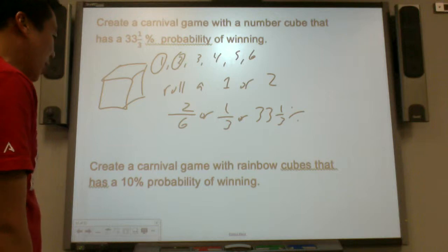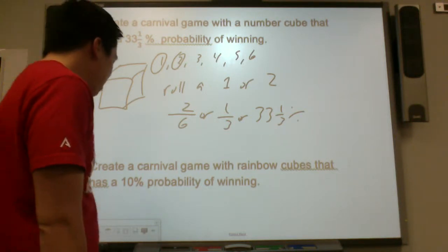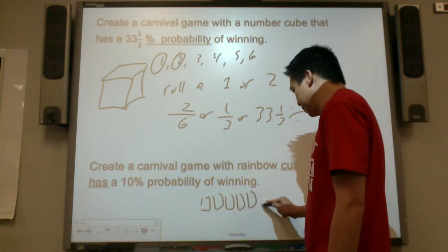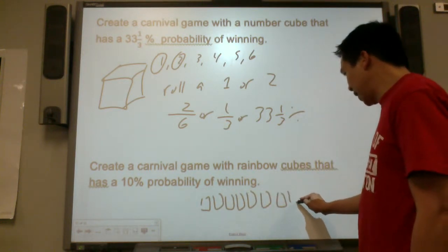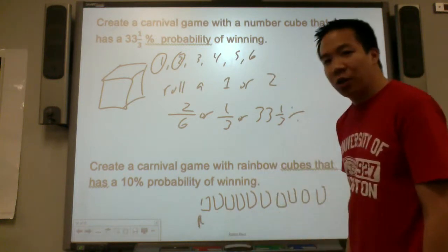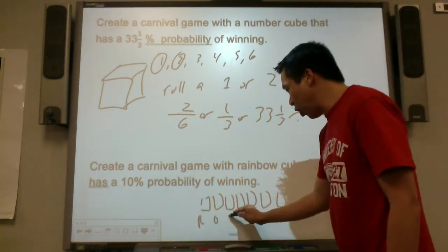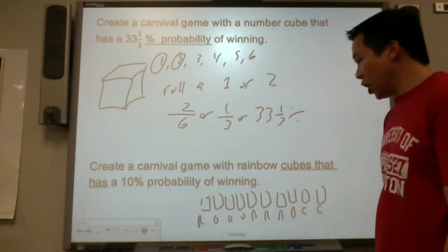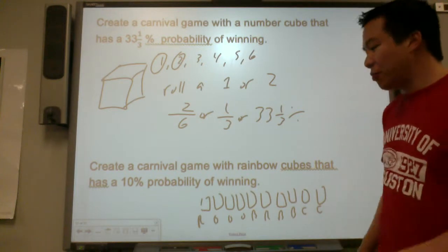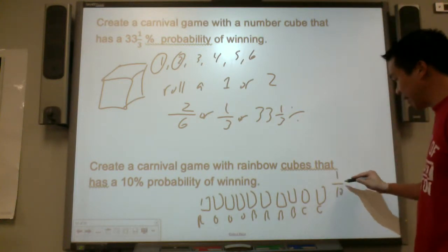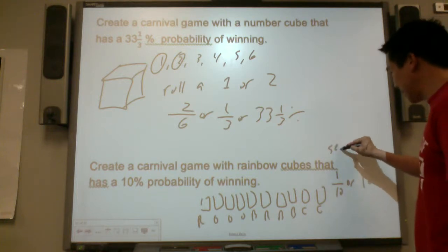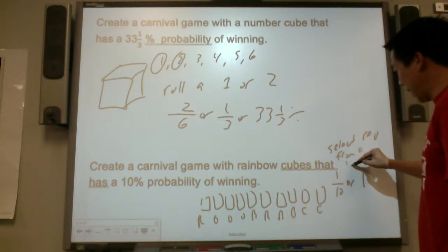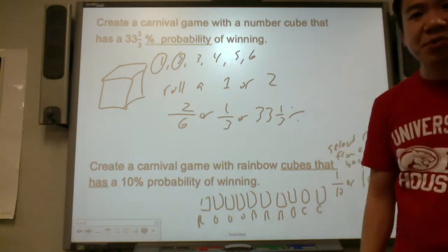Create a carnival game with rainbow cubes that have 10% probability of winning. So let's say if you have 10 rainbow cubes: seven, eight, nine, ten. You make the first rainbow cube red, the other ones will be all different types of colors. So if you select red from the bag, it's one out of 10 or 10%. Select red from a bag. That will be a 10% chance of winning.